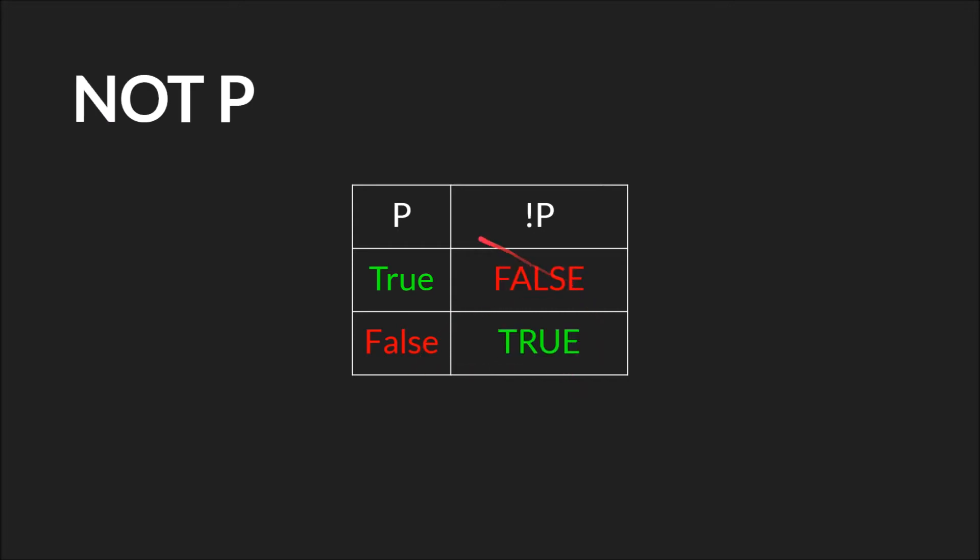Now, however, we're going to add the NOT operator. So we're saying P is true, but NOT P, therefore, is false. If P is false, NOT P is true. So the NOT operator simply reverses the truth value of a statement.